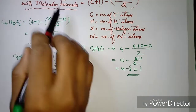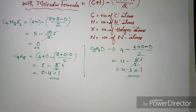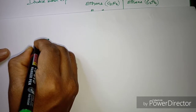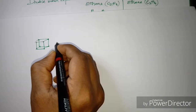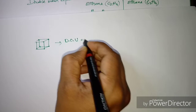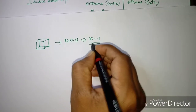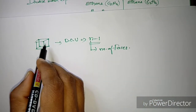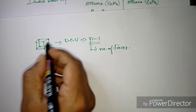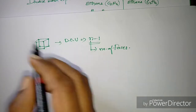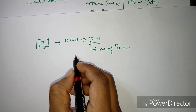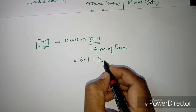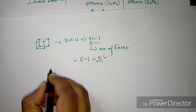We can also find the degree of unsaturation for 3D structures. Here we take a 3D structure like a cuboid. For 3D structures, the degree of unsaturation is known by n minus one, where n represents the number of faces. A cuboid generally has six faces, so six minus one equals five. The degree of unsaturation for a cuboid is five.